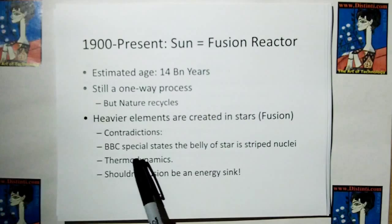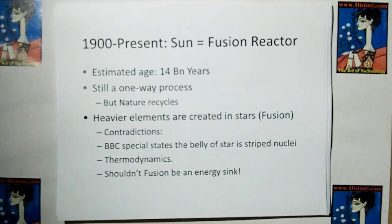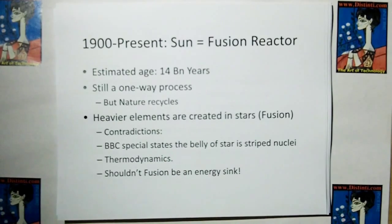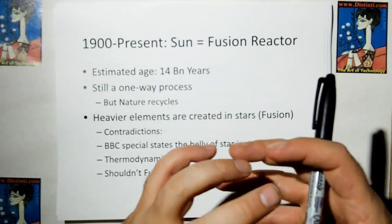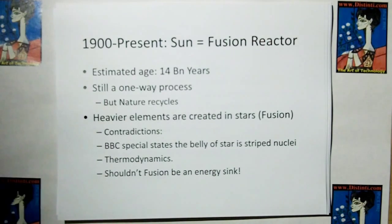But here's some contradictions. The BBC special states that the belly of the star strips nuclei. Well, if it strips nuclei, how can we be making heavier elements without electrons? That's an argument. It also violates thermodynamics. Thermodynamics says everything is going to a lower and lower energy state. Well, if we're fusing things into heavier and heavier atoms, they have to be having more and more energy. So it's going against the law of thermodynamics.